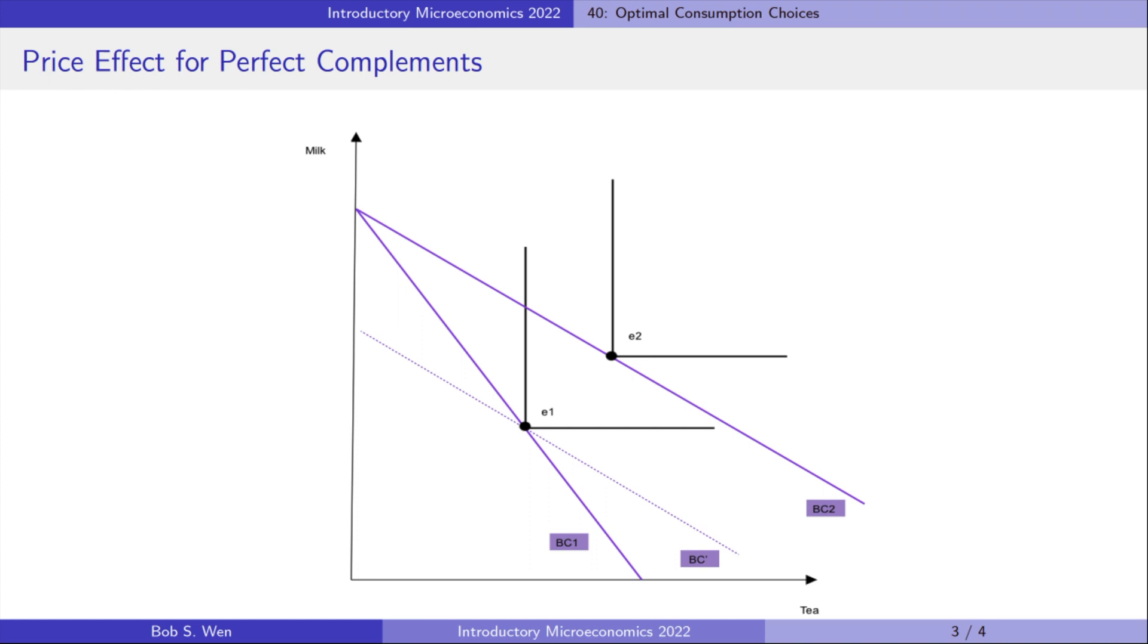The total effect of the price drop comes from the income effect. The consumer becomes richer because of the price drop and can afford more of both goods. The income effect is from E1 to E2. It is also the total effect. There's no substitution effect for perfect complements.